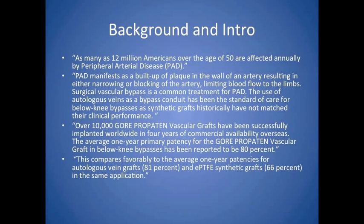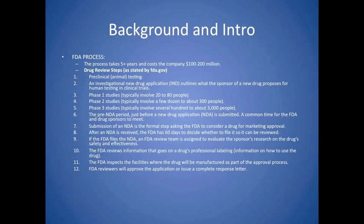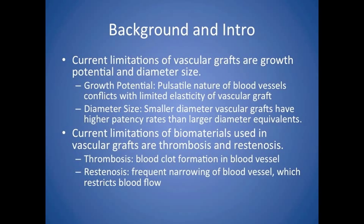As many as 12 million Americans over 50 suffer from peripheral artery disease, caused by buildup of plaque in the wall. Over 10,000 of our company's vascular grafts have been implanted worldwide. This compares favorably to the average one-year patencies for autologous vein grafts at 81%, and ePTFE synthetic grafts at 66%, in the same application. The FDA process generally takes 5 or more years and costs a company 100 to 200 million dollars. Current limitations include growth potential and diameter size, as well as thrombosis and restenosis.